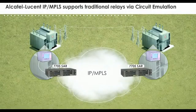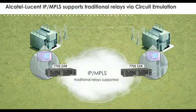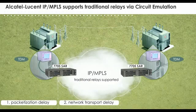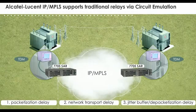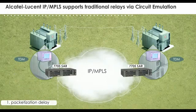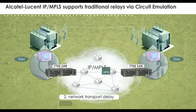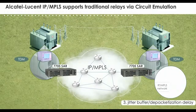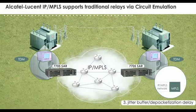The Alcatel-Lucent IP MPLS network supports traditional relays using circuit emulation service. For an IP MPLS network, the communication network latency for TDM traffic over IP MPLS consists of packetization delay, network transport delay, and jitter-buffer depacketization delay. Packetization delay relates to the process of transforming TDM traffic into packet data. Network delay relates to the fixed delay based on physical link speed and distances involved and a variable delay depending on the number of nodes traversed. Jitter-buffer and depacketization delay relates to the time required for a data packet to move out of the jitter-buffer and to get depacketized into a TDM stream connecting to the teleprotection relays.